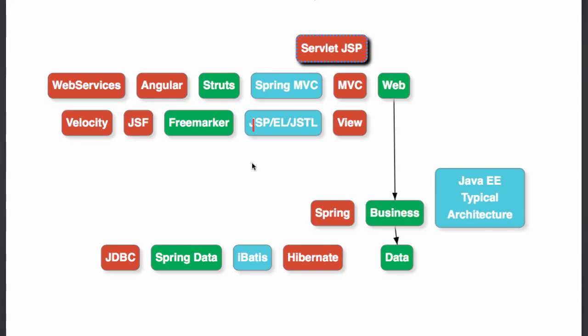Let's now consider a typical Java web application and see how the different modules of the Spring framework are used in it. The first assumption is that the Spring framework is used to wire in everything — it connects the web layer with the business layer, and the business layer with the data layer. It is the glue which integrates everything. The thing used here is the Spring Core framework — that is, the application context.